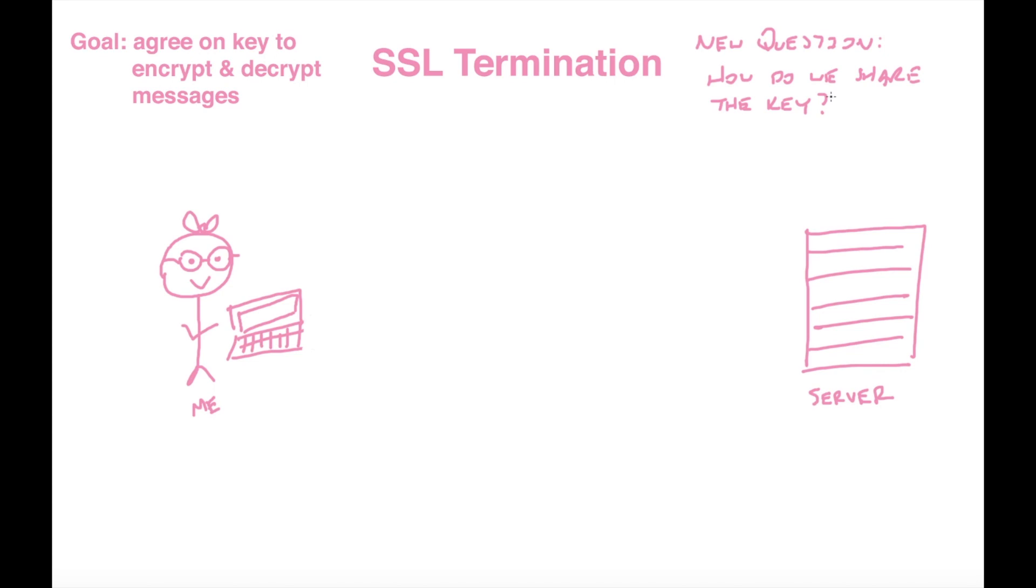So previously for that blue key that was called symmetric cryptography because we were using the same key to both encrypt and decrypt our messages. Now we're going to use something called asymmetrical cryptography. And the way asymmetrical cryptography is we have two keys. We have one public key which I'm going to draw in red here. This is public. And we have a private key.